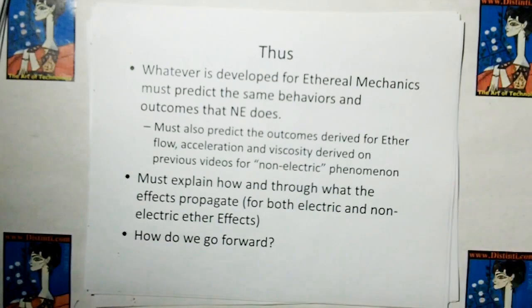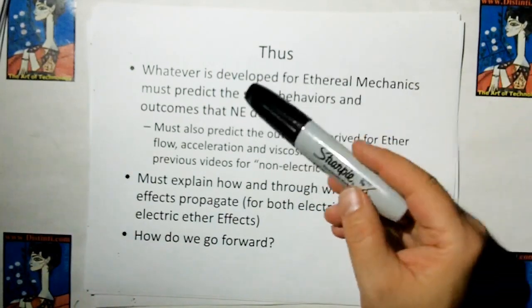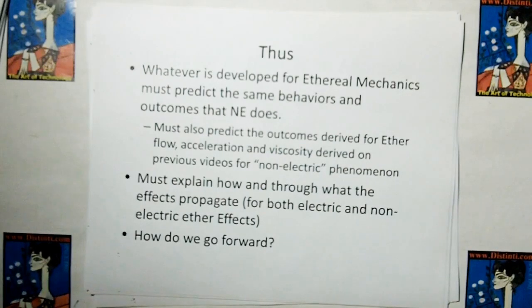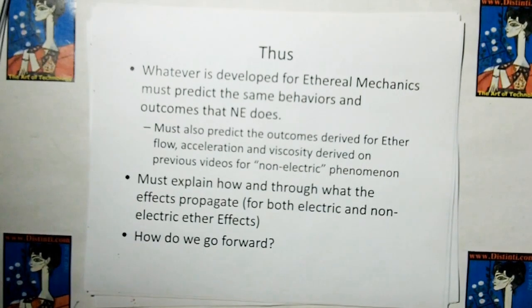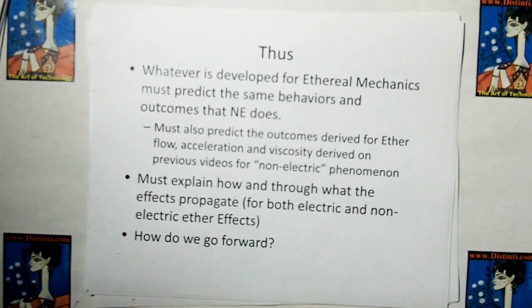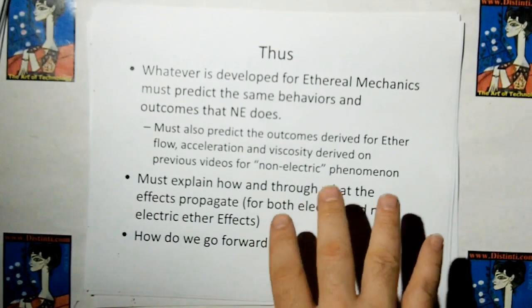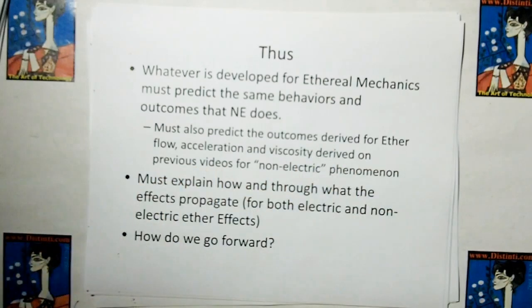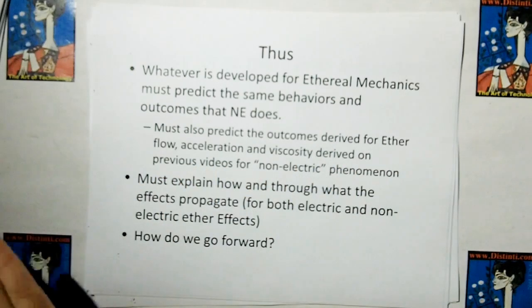So that's why rule of acquisition 10 is important here. Whatever is developed for ethereal mechanics must also predict the same behaviors and outcomes that new electromagnetism does. It must also predict the outcome derived for ether flow, acceleration, viscosity, derived in the non-electric phenomenon. And we must explain how and through what the effects propagate for both electric and non-electric ether effects.